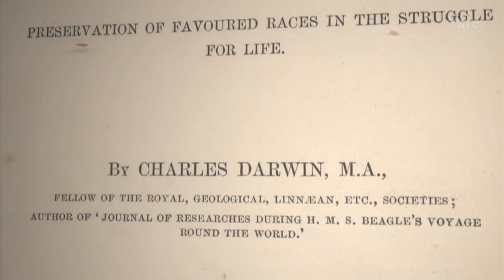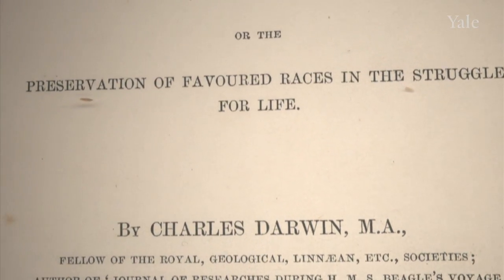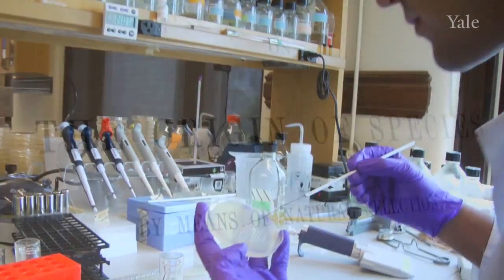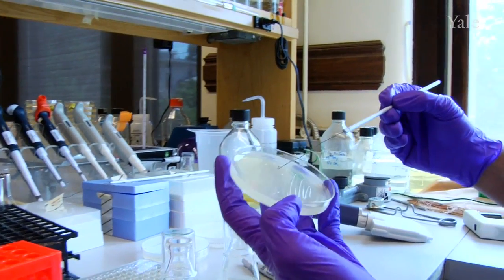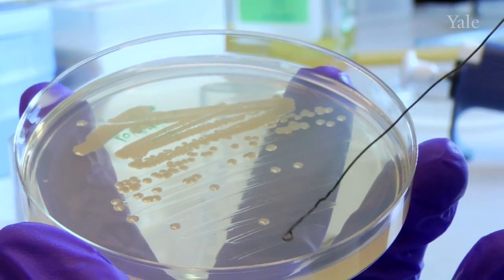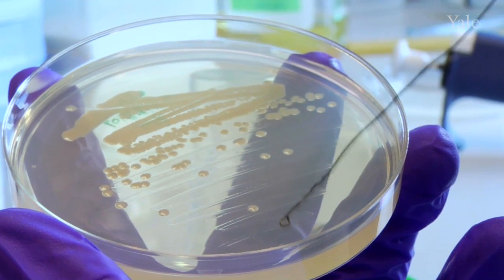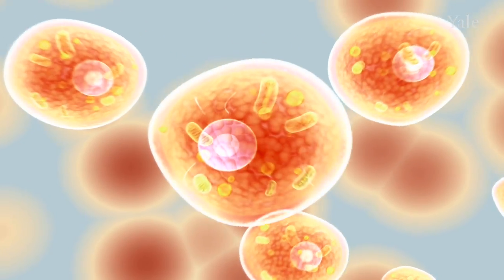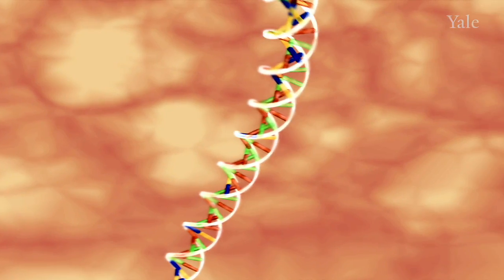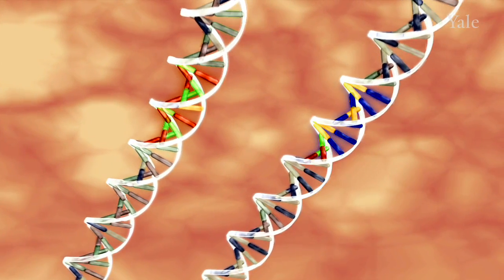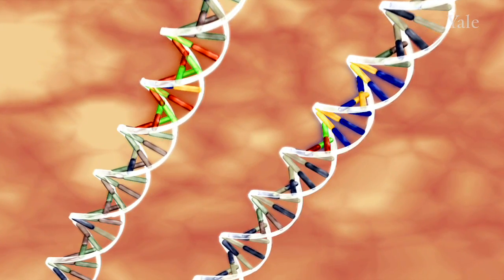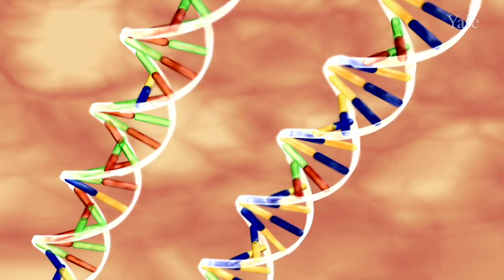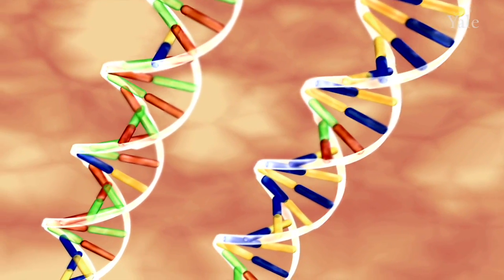One hundred and fifty years after Darwin's publication of the Origin of Species, evolutionary biology continues to be an exciting field of scientific research and discovery. Darwin's theory of natural selection involved inheritance of variation from adult to offspring. Darwin never knew the exact mechanism for this genetic inheritance. Today we know it as DNA.